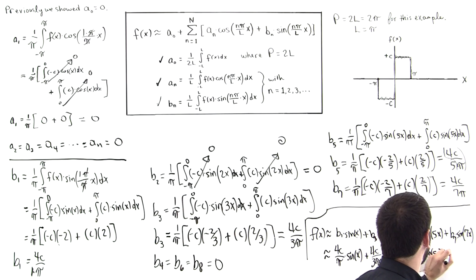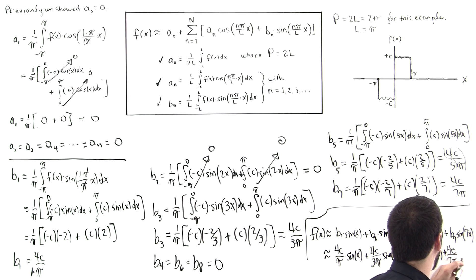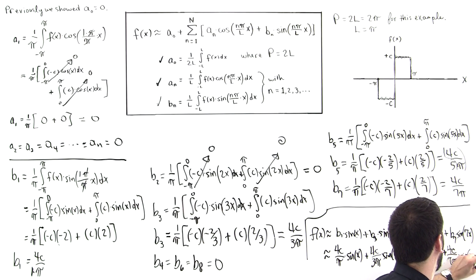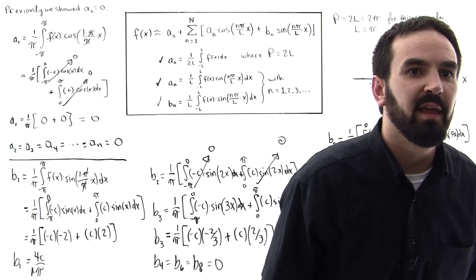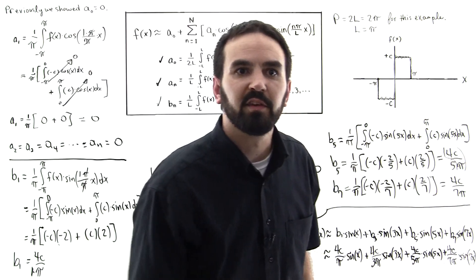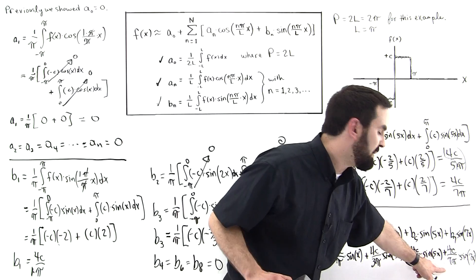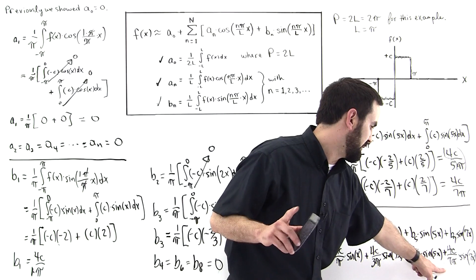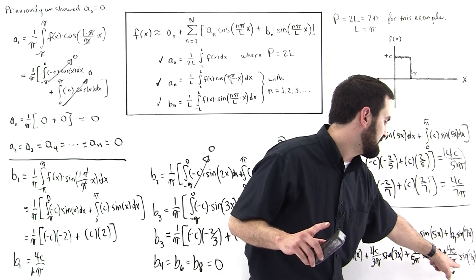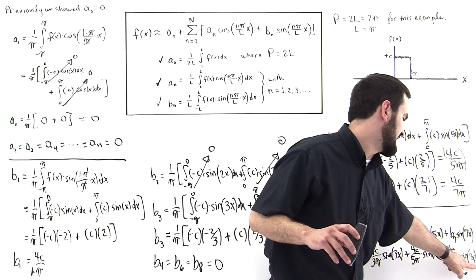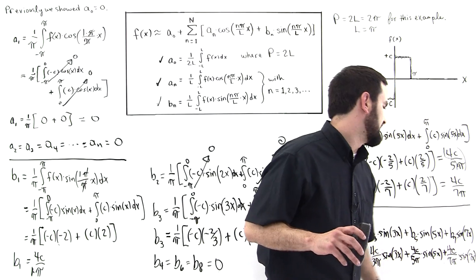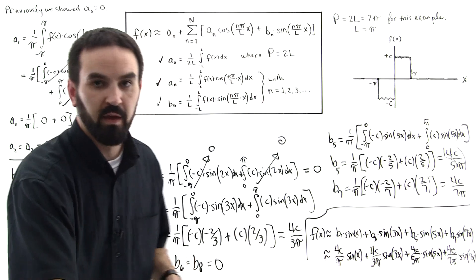Plus 4c over 7pi times the sine of 7x. I'll call it out to you audibly: 4c over 7pi times the sine of 7x. There's a 7x in there — that's what's supposed to be there. Done.